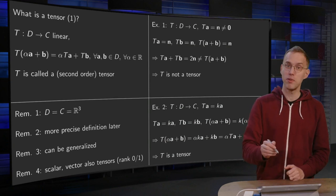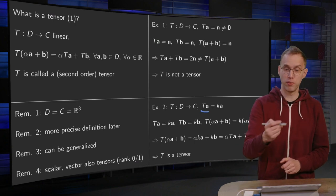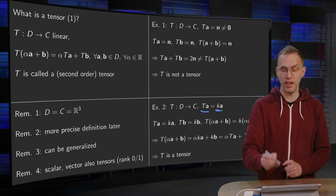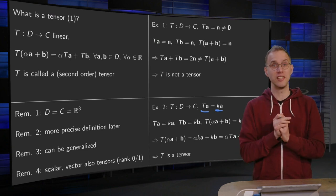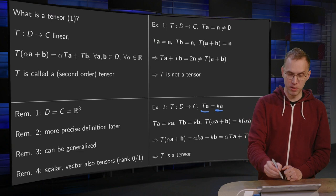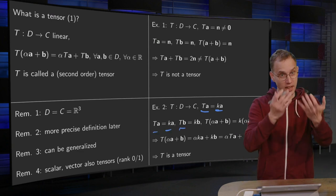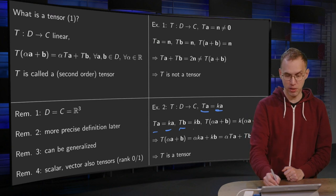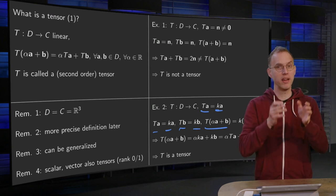Second example. Suppose we have some tensor T which maps all vectors to a multiple of the vector. So T of A equals k times A, where k is some scalar. Is this a tensor? Now we know T of A equals k times A and T of B maps B to k times B. This multiple of B, so T of B equals k times B. And T of something bigger, alpha A plus B, is mapped to k times alpha A plus B, as we see over here.